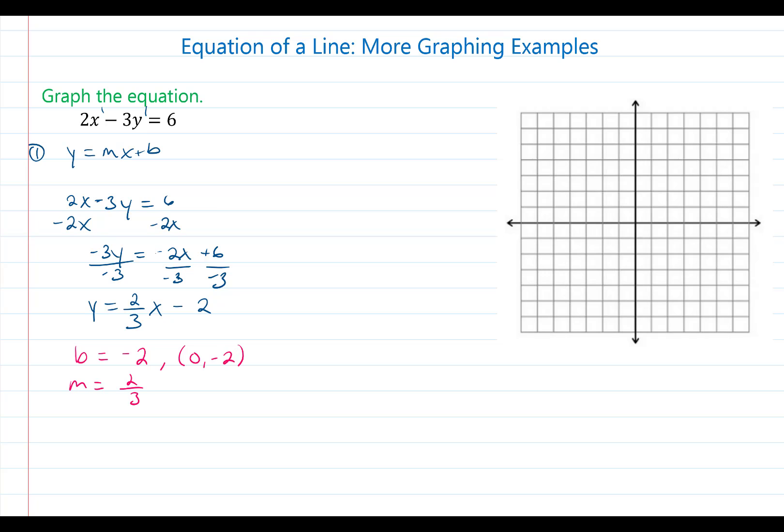We'll go ahead and use this strategy to graph our line and then I'll show you the alternative strategy. So we'll plot (0, -2) which is down 2 units on the y axis. From there we'll go up 2 units and to the right 3 units to plot my second point on the line. Bare minimum we need two points to graph a line. So those two points do represent my line.